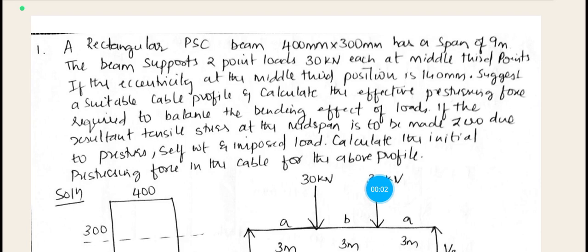A rectangular PSC beam 400 mm by 300 mm has a span of 9 meters. The beam supports two point loads, 30 kN each, at middle third points. If the eccentricity at the middle third position is 140 mm, suggest a suitable cable profile and calculate the effective pre-stressing force required to balance the bending effect of the loads. If the resultant tensile stress at the mid-span is to be made zero due to the pre-stress, self-weight, and imposed load, calculate the initial pre-stressing force in the cable for the above profile.